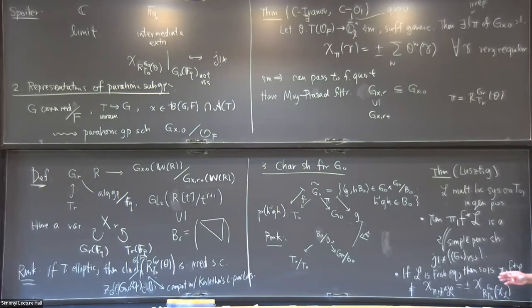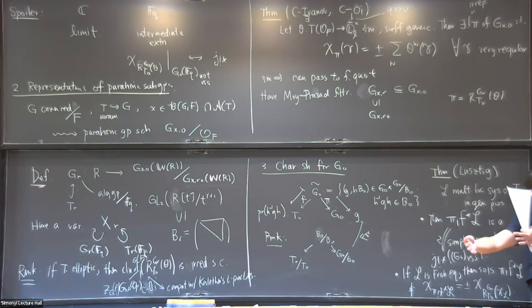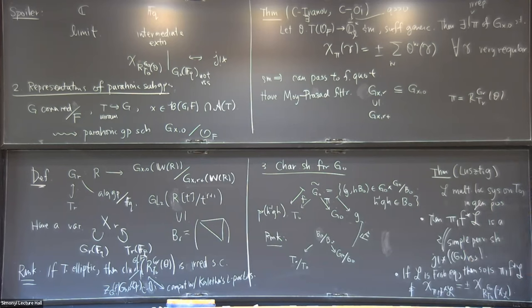There's a relationship between the geometric side and the representation theory side. One is using geometry to construct representations; one is using geometry to construct equivariant sheaves. The natural decategorifications of both end up agreeing.